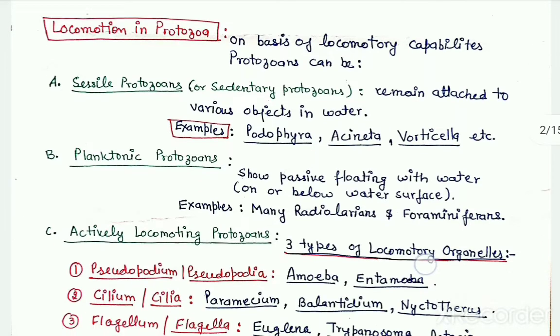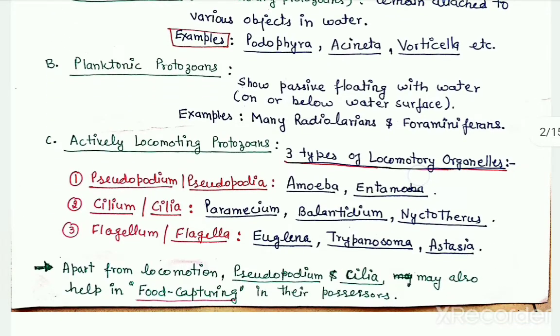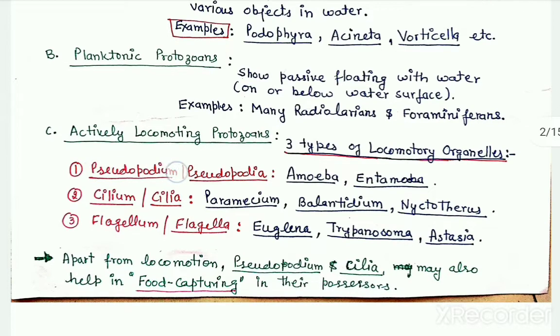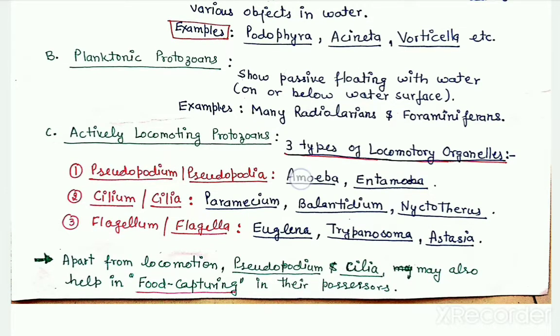In case of actively locomoting protozoans, they may have any one out of three types of locomotory organelles. Out of these, today we will take up locomotion with the help of pseudopodium with reference to amoeba.